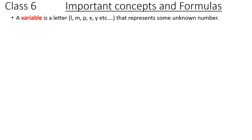Variable. A variable is a letter like L, M, P, X, etc. that represents some unknown number. So when we do not know the number, we use letters or variables to represent it.